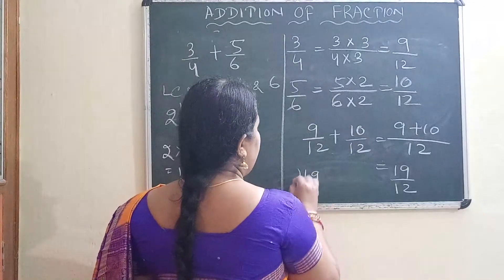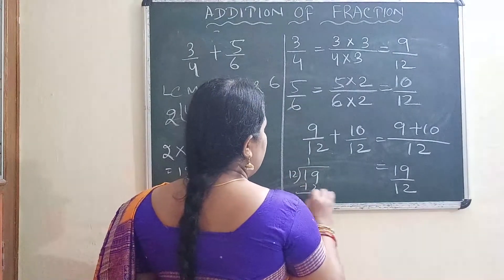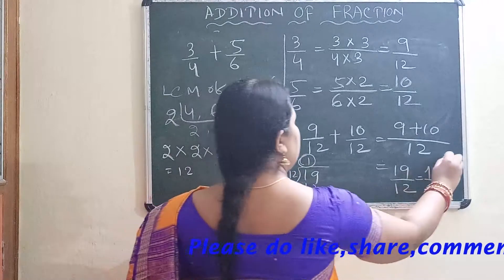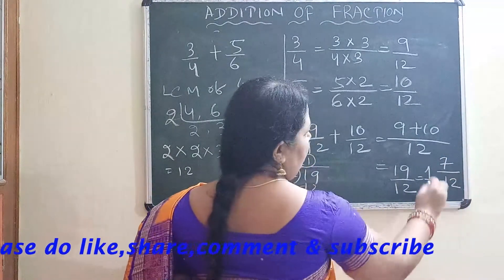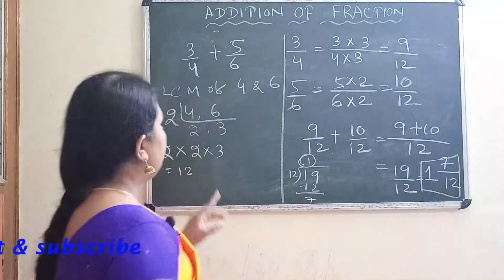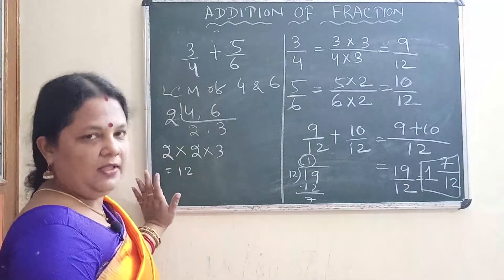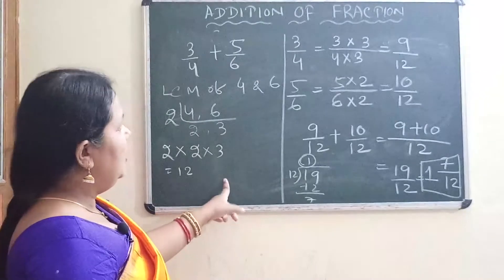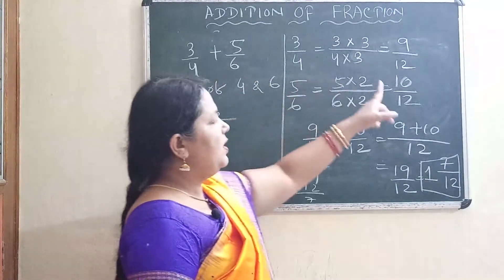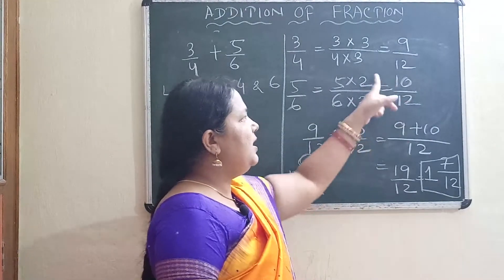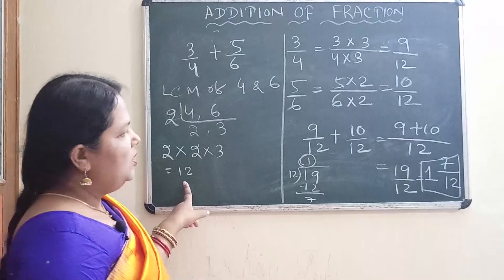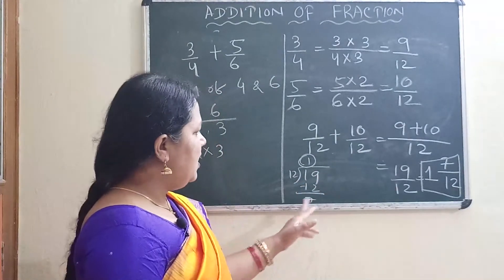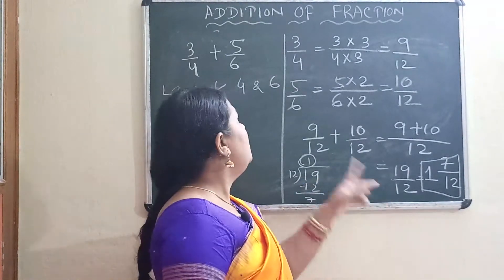So we have to convert this improper fraction to a mixed number. 19 by 12: 12 ones are 12, with 7 left over. So the whole number is 1 and the numerator is 7, giving 1 whole 7 by 12. This is your final answer after addition of unlike fractions. Remember: first find the LCM of denominators, convert unlike fractions to like fractions, then apply the addition formula.